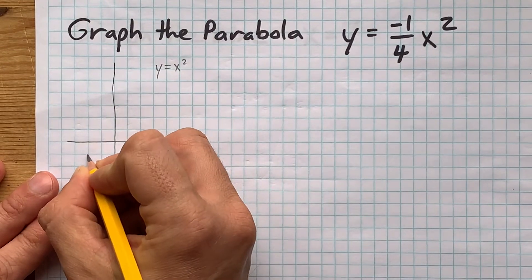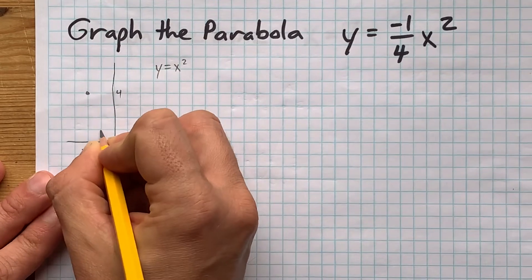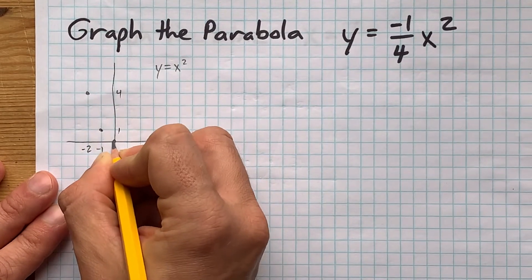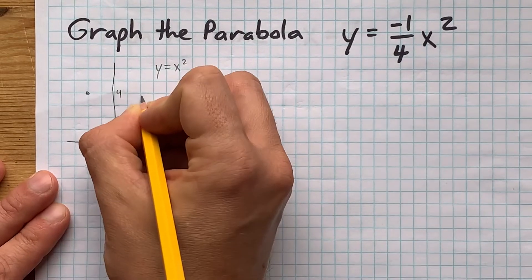You have points at negative 2 comma positive 4, negative 1 comma 1, 0 comma 0, 1 comma 1, and 2 comma 4.